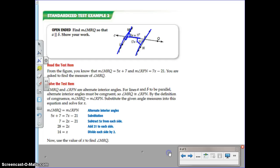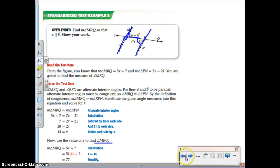So they asked us to find M R Q so that A would be parallel to B. Well, we know X, so now we need to find M R Q, and we would just plug 14 in for X, or substitute, and we end up getting M R Q, that angle is equal to 77 degrees.